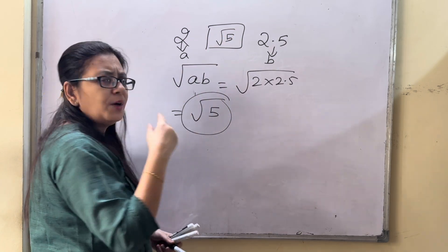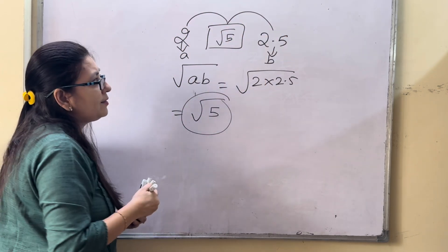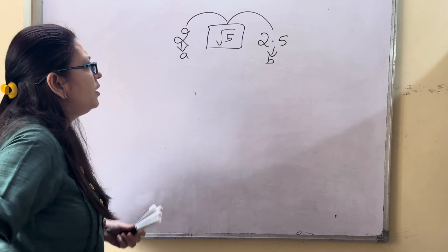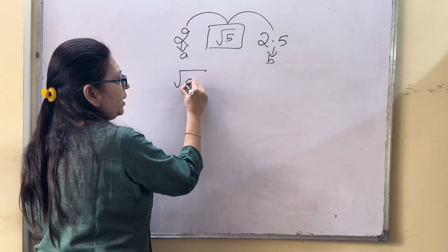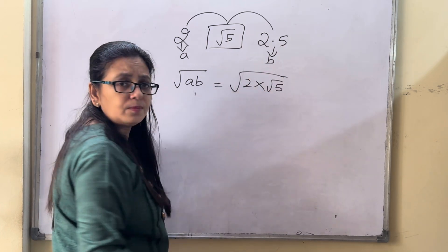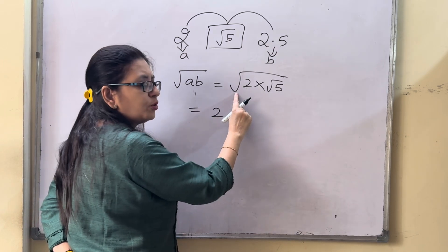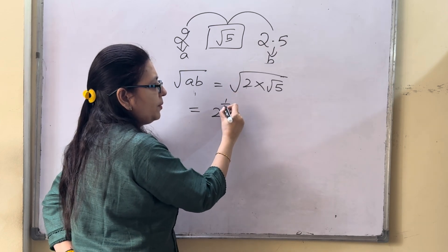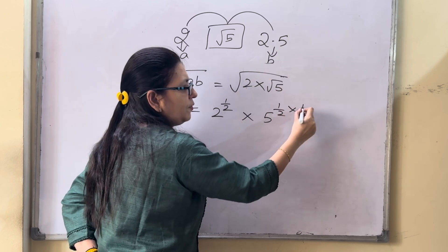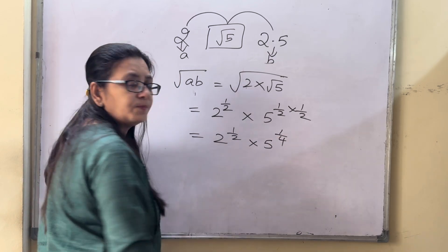What if they ask for one more irrational number between these two? Take either of the two adjacent pairs. The formula is the same: root AB. Say we want one between 2 and root 5. So root of 2 times root 5 — in exponential form: 2 to the power 1/2, times 5 to the power 1/4 (since there's another square root). The answer is 2 to the power 1/2 times 5 to the power 1/4.